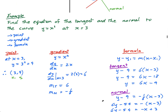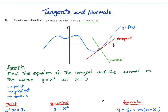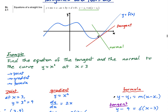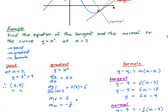Just to recap: a tangent is a straight line that touches the curve at one particular point — it just touches and moves away, it doesn't go through it. The normal is a straight line that is perpendicular to the tangent. To get the equations, you follow three steps: find a point, find a gradient by differentiating, and sub into the formula — remembering that for the normal you flip the gradient and change the sign.